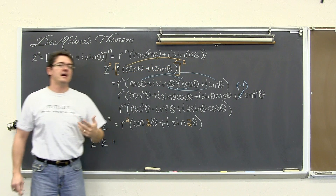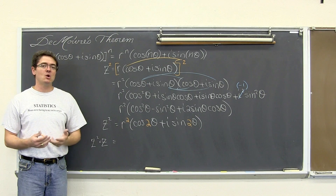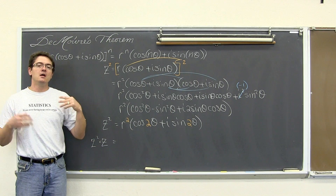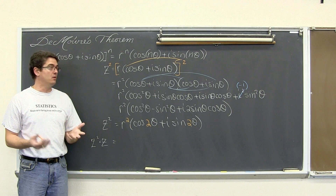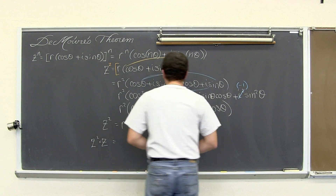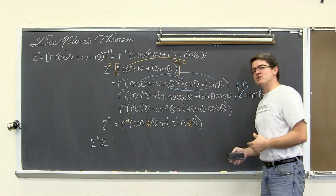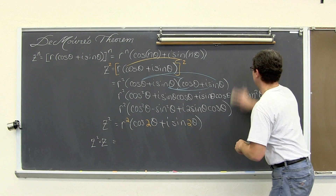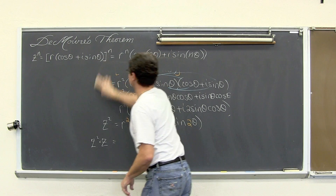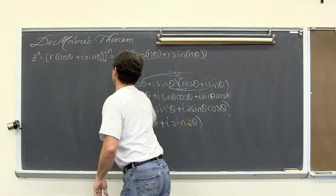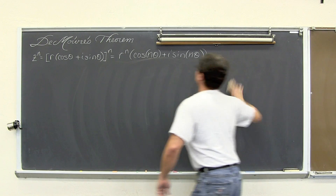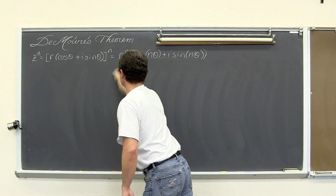You can see how De Moivre's theorem is working here: we have r to the n power times the cosine of nθ plus i sine nθ. That pattern shows up even with the power of two, and if you go to the power of three and four and so on, the pattern will continue. That is not a full proof, but a demonstration of how this pattern shows up and a little bit about why De Moivre's theorem works. So let's use that theorem to do an example.